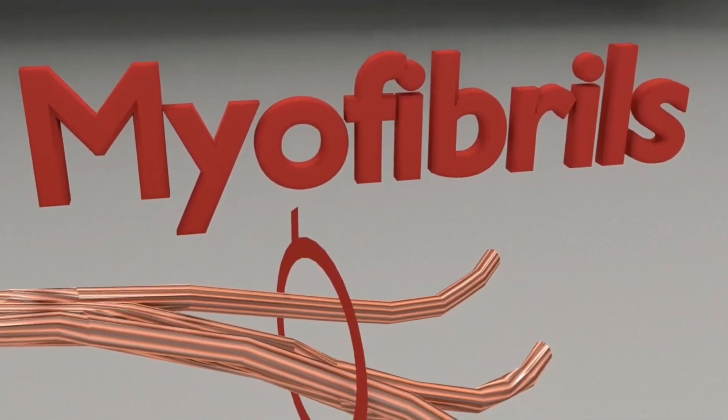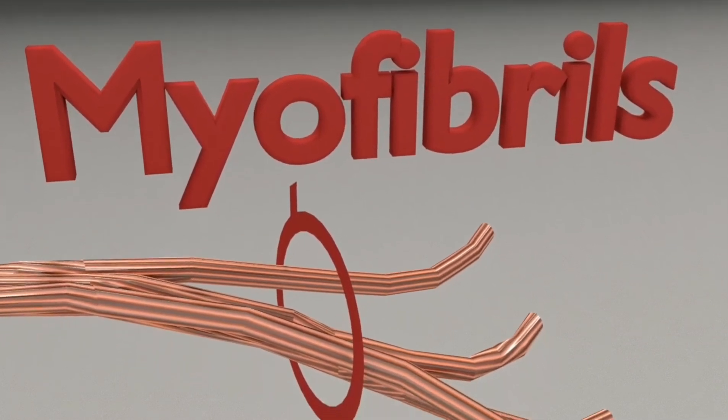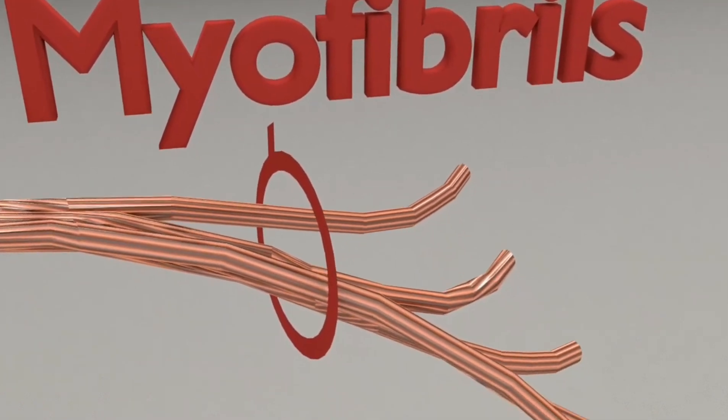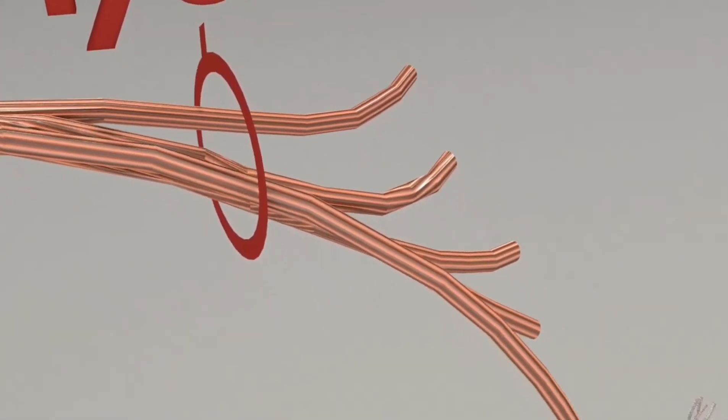Myofibrils are long filaments that run parallel to each other to form muscle fibers. Each myofibril is made up of two types of filaments: thin filaments called actin and thick filaments called myosin.